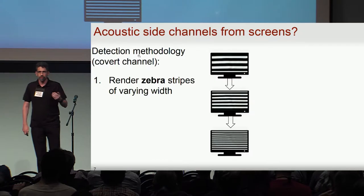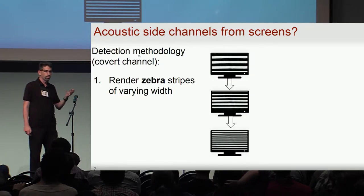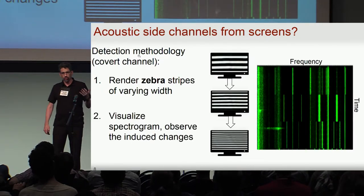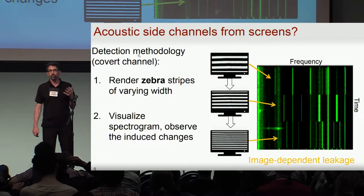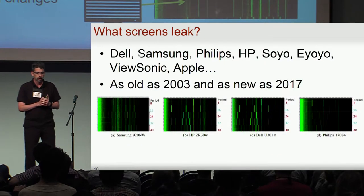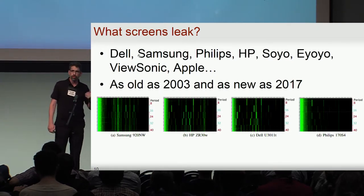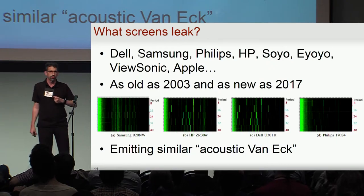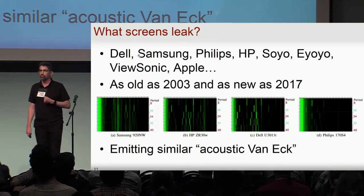To investigate this, we started by setting up a simple covert channel detection methodology. We rendered simple zebra stripes across the screen of various thickness, and we recorded them using a microphone. We observed that as we changed the thickness of the zebra stripes, the acoustic signature changes and the spectral lines shift. Clearly, if different zebras have different acoustic signatures, there is image-dependent leakage. This acoustic Van Eck, if you will, reveals the content of the screens by the movements of the frequency content.